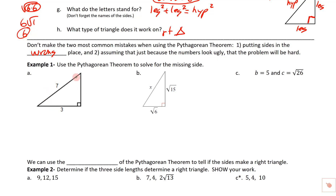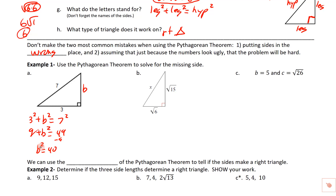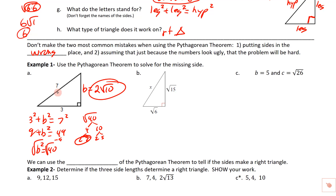Looking at this problem, a common mistake would be just adding 7 squared and 3 squared and setting it equal to the third side. But remember, 7 is the hypotenuse and we're missing a leg, so I'll use B to represent it. Leg squared plus leg squared equals hypotenuse squared: 3 squared plus B squared equals 7 squared, giving 9 plus B squared equals 49. Subtract 9: B squared equals 40. Take the square root — square root of 40 simplifies to 2 radical 10. That's the missing leg.